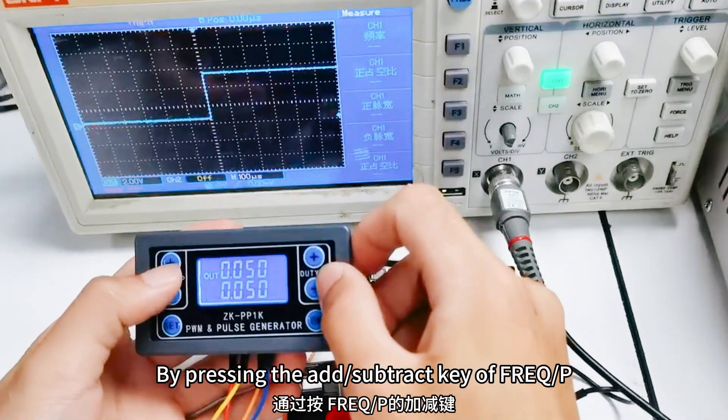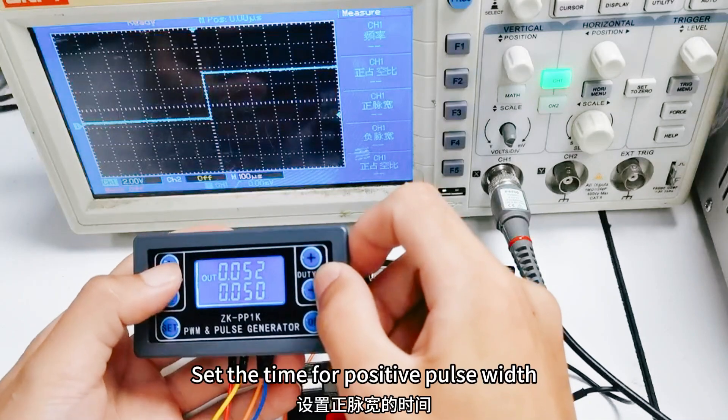By pressing the add, subtract key of FragP, set the time for positive pause width.